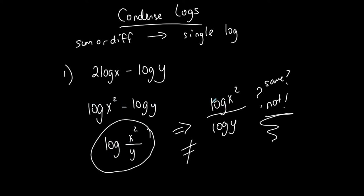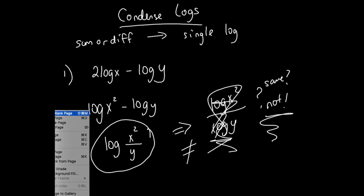A single log of a quotient comes from a difference of separate logs. Do not make this error — this is two different logs. Be careful you don't do that. I see it all the time.